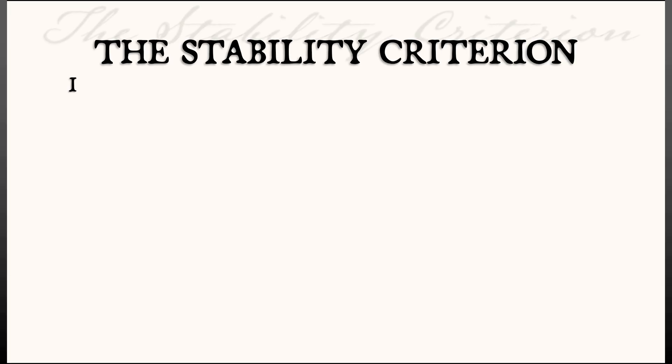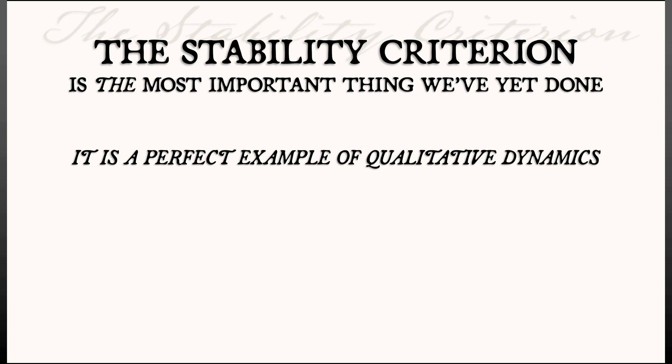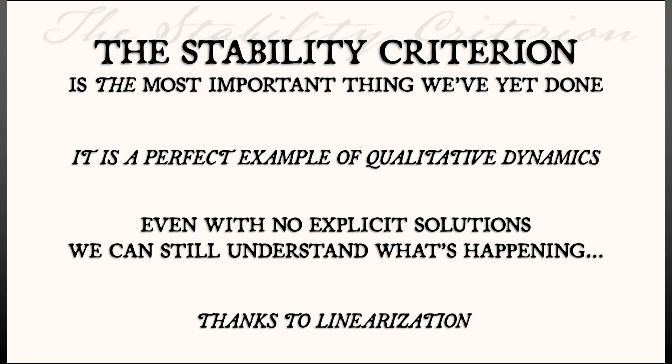Okay, let's wrap things up here. The stability criterion is the most important thing that we have yet done in this volume. It is just a perfect example of how to do qualitative dynamics. Even without being able to construct explicit solutions, we can still understand what is happening long-term, in limits, thanks to linearization.